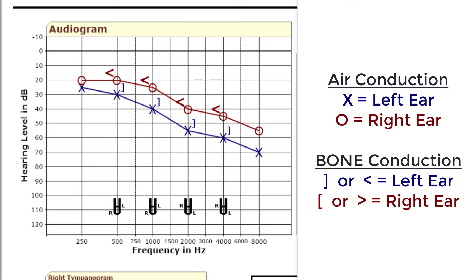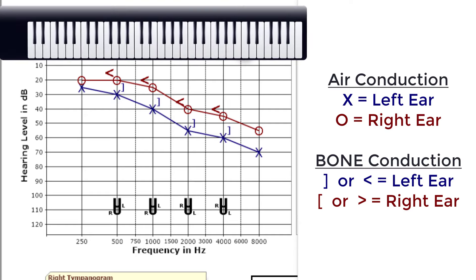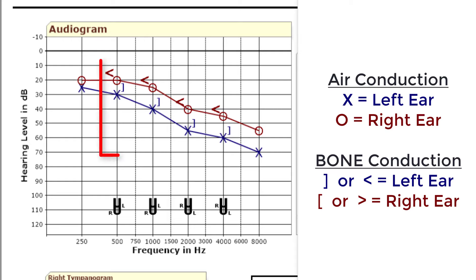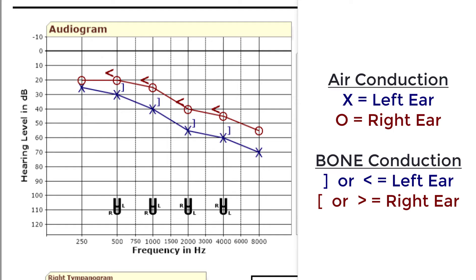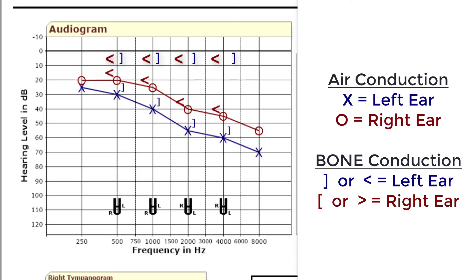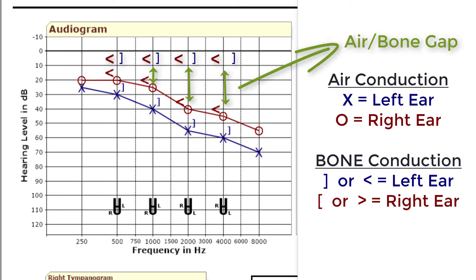The lower your markings are in this graph, the louder we have to play the beeps before you can hear them, and the worse your hearing sensitivity is. It also goes from the low frequencies or low pitches on the left-hand side to the high frequencies or high pitches on the right-hand side, kind of like a piano keyboard. The blue and red angle and square brackets indicate your hearing sensitivity when sound is bone conducted through your skull, bypassing the outer and middle ear, and stimulating your inner ear directly. These are called your bone conduction scores. If the square and angle brackets are close to the X's and the O's, then it indicates that the damage to your hearing is inside of the cochlea itself. If the brackets are higher on this graph, it means that some or all of your hearing loss is due to sound not being able to make it through the outer and middle ear effectively. This is something that is commonly referred to as an air bone gap due to a visible gap between the air conduction scores and the bone conduction scores.